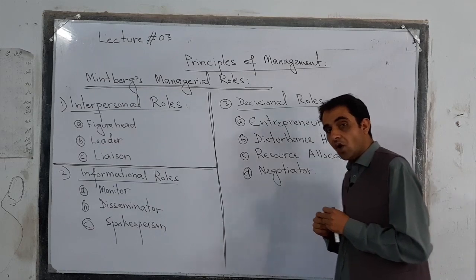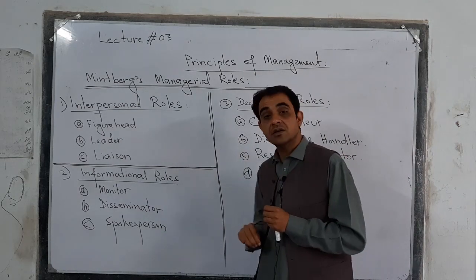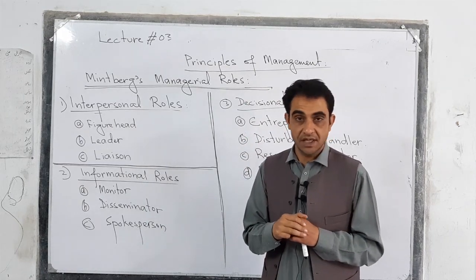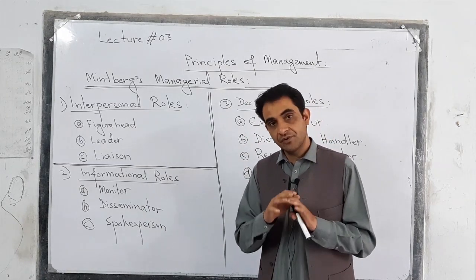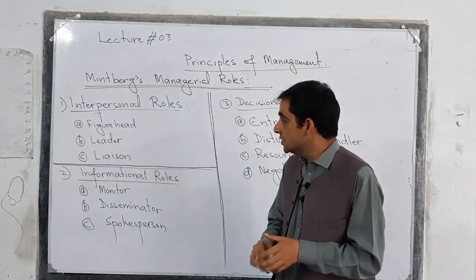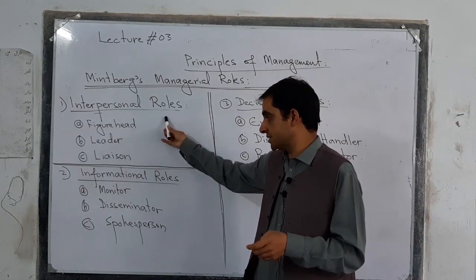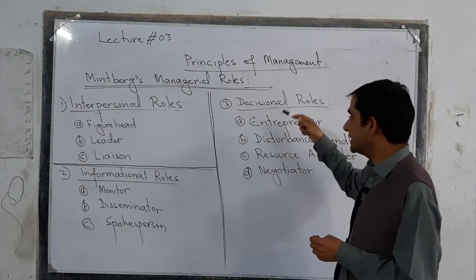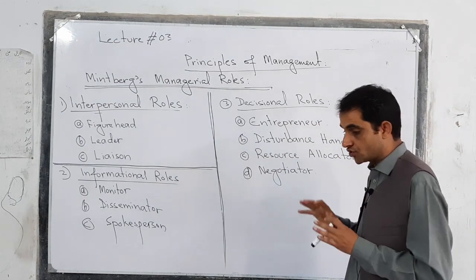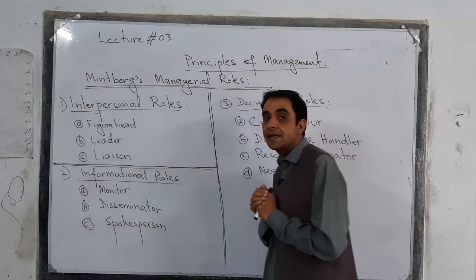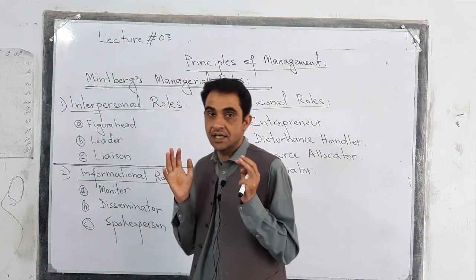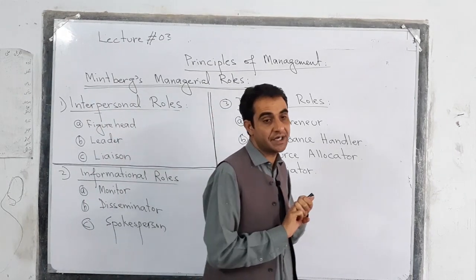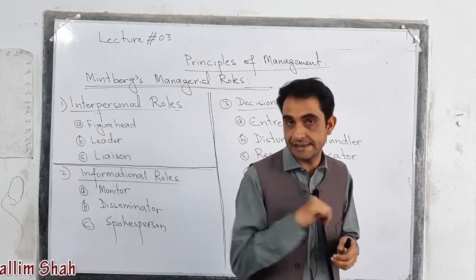So, if we see here, we have three major managerial roles overall. Taking them altogether: three interpersonal roles, three informational roles, and four decisional roles — making a total of ten managerial roles, divided into three major categories.